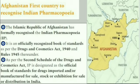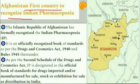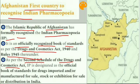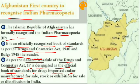The next issue: Afghanistan has become the first country to recognize the Indian Pharmacopoeia (IP). The Islamic Republic of Afghanistan has formally recognized the IP, which is an officially recognized book of standards for drugs imported and manufactured for sale, stock, exhibition for sale, or distribution in India.